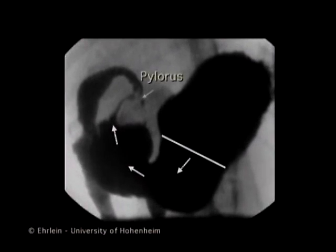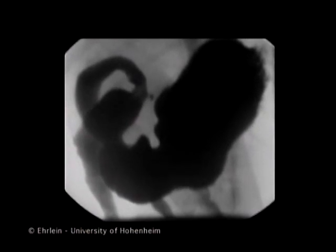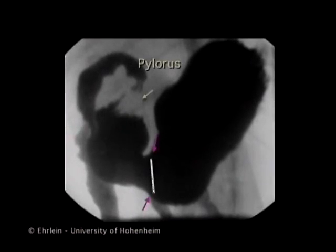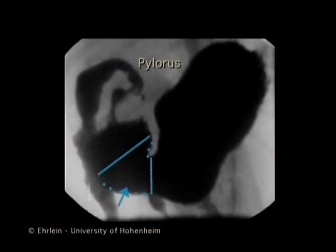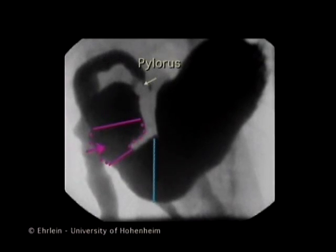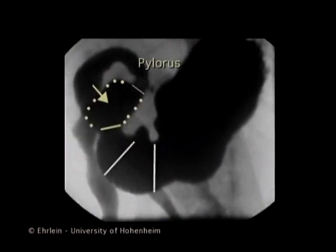The peristaltic waves originate at the gastric body and propagate towards the pylorus. When the peristaltic wave reaches the antrum, the constriction of the wave becomes deeper. At the antrum, three parts can be differentiated: a proximal antrum, a middle antrum, and a terminal antrum.